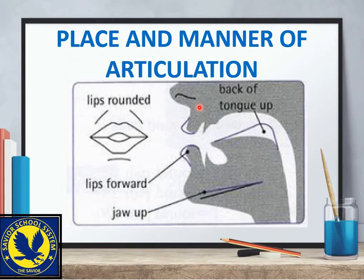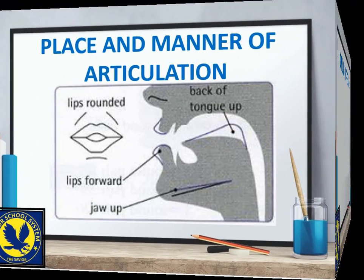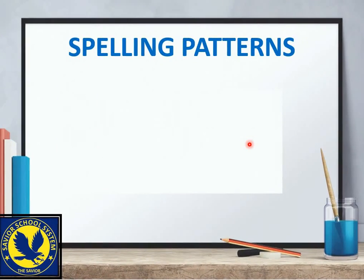اس کی place and manner of articulation یہ ہے کہ ہونٹ تھوڑے سے rounded form میں ہوتے ہیں، lips تھوڑے سے آگے forward کیے ہوئے ہوتے ہیں، jaw is in the up position، اور back of the tongue is raised a little bit — تب یہ sound صحیح طرح produce ہوتی ہے۔ اس کا spelling pattern کیا ہے — مختلف spellings اس کے لیے استعمال ہوتی ہیں۔